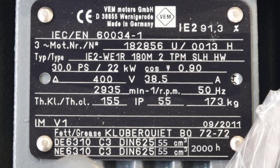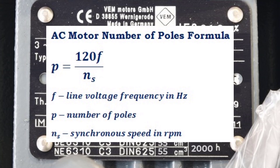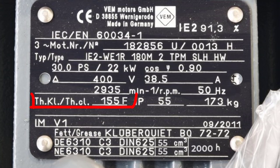The rotor speed is 2935 RPM, which is near the synchronous speed of 3000 RPM. We can deduce the number of poles using the equation: P = 120 × frequency / synchronous speed. So P = 120 × 50 Hz / 3000 RPM, which equals 2 poles.